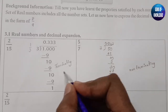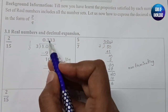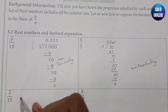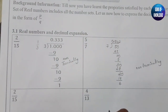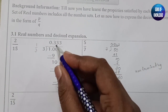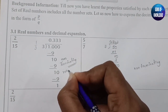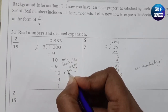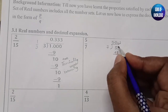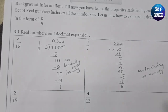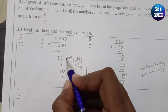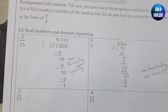Let me correct my mistake — 0.333... is also a non-terminating number. Non-terminating means we do not get a remainder of 0; the number keeps continuing. But we must distinguish: 0.333... is non-terminating recurring — the digit repeats. Whereas 0.7142... is non-terminating non-recurring — the digits do not repeat the same sequence. So one is non-terminating recurring and the other is non-terminating non-recurring.